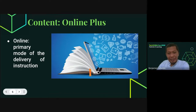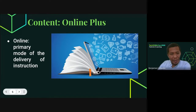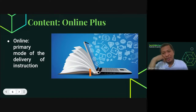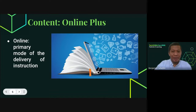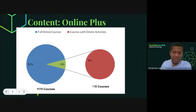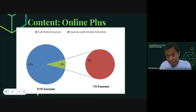As part of our discussion in academics, we will be adopting online class as a model in the delivery of blended learning. Online class primarily refers to the mode of delivery of instruction — online or full online as the primary mode. This semester, we have 1,285 courses being offered: 1,175 courses will be delivered fully online, and 110 undergraduate courses will be delivered with on-site learning activities.